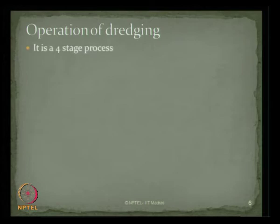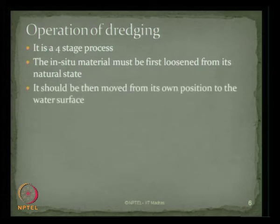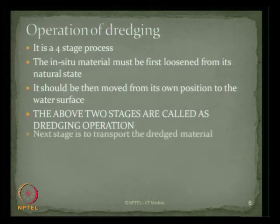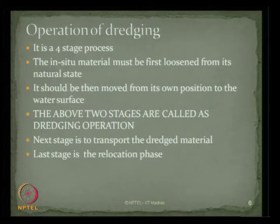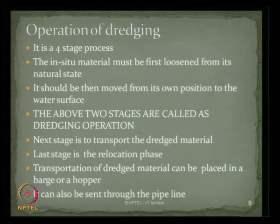Dredging is essentially a four-stage process. In the first stage, the in-situ material to be dredged is loosened from its natural state. In the second stage, it is moved from its position to the water surface — together called the dredging operation. In the third stage, the collected material is transported. In the last stage — the relocation phase — the dredged material is placed in a barge or hopper, or sent through pipelines.